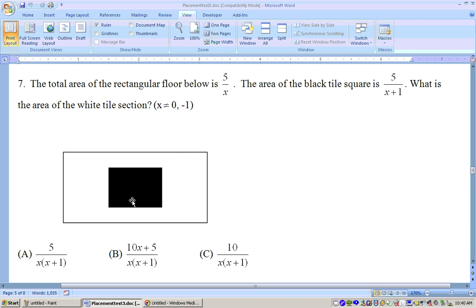You take your entire area and subtract off your black area, and you'll get the area of the white section. In other words, we need to take the area of the whole thing, which is 5 over x,